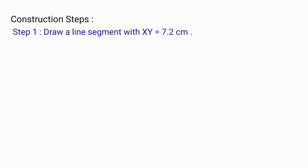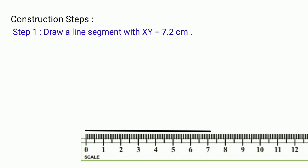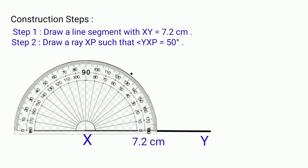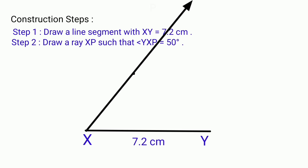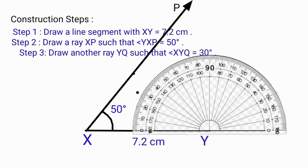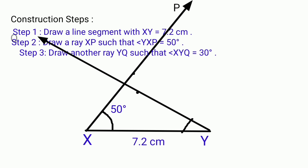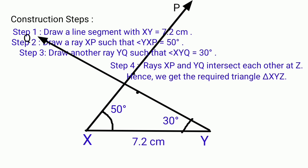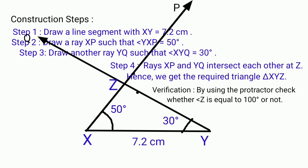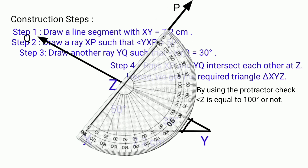Construction steps. Step 1: Draw a line segment XY equal to 7.2 cm. Step 2: Draw a ray XP such that angle YXP equals to 50 degrees. Step 3: Draw another ray YQ such that angle XYQ equals to 30 degrees. Step 4: Rays XP and YQ intersect each other at Z. Hence we get the required triangle XYZ. Verification: By using the protractor, check whether angle Z is equal to 100 degrees or not.